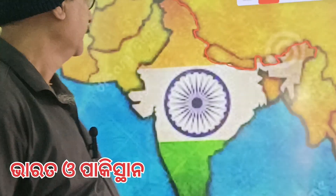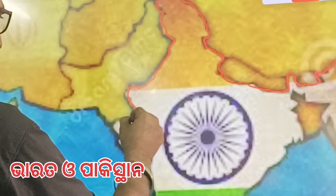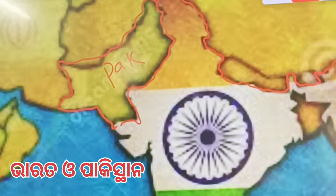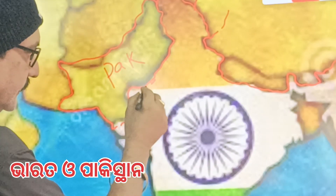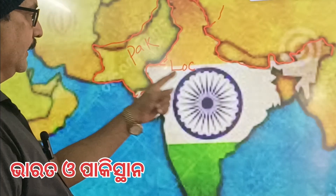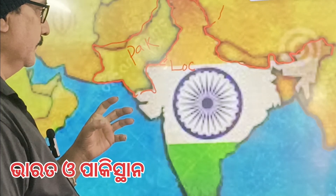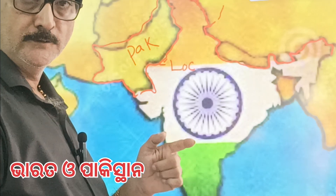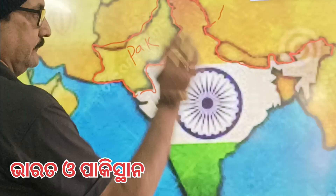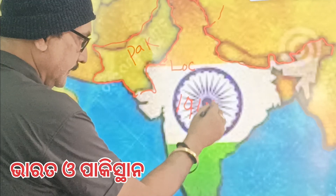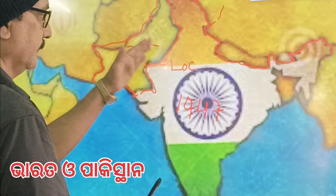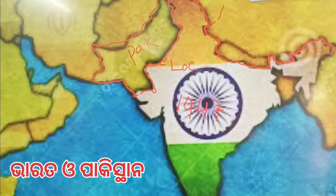If you look at the border, I will mark the border. This is Pakistan. This area is the border line. The border line from 1947 — in 1947, during the partition, the border line was established.